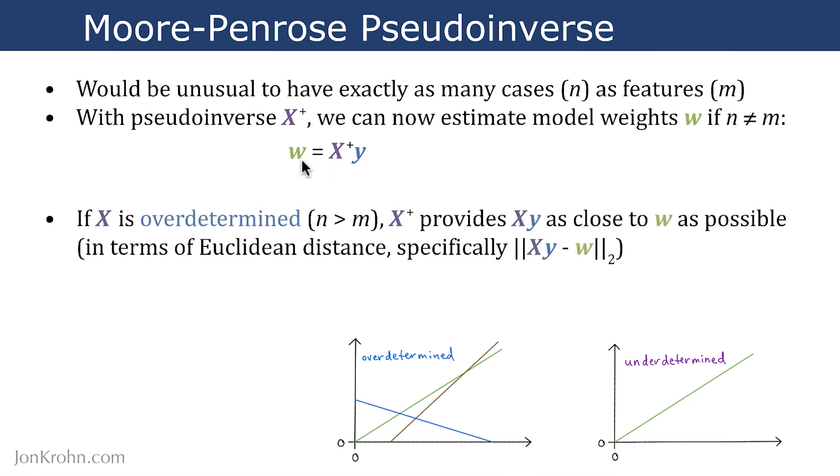So how does it do it exactly? You don't need to memorize this. Memorizing these next two bullets isn't going to make or break a machine learning or data science career. But just for the sake of completeness, I wanted to spend a moment here talking about it. If the matrix X is an overdetermined system, so the number of rows is much greater than the number of columns, the pseudoinverse provides XY matrix multiplication as close to W as possible in terms of Euclidean distance, L2 norm, plain old distance. Specifically, it finds X times Y minus W and the L2 norm of that difference.